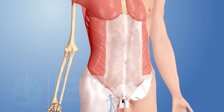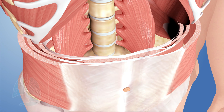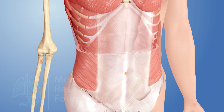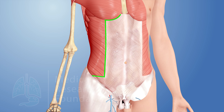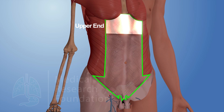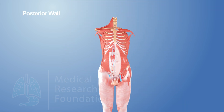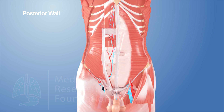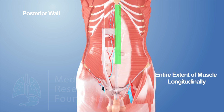The rectus sheath presents anterior and posterior walls. The anterior wall is complete and covers the entire extent of the muscle longitudinally, from the upper end to the lower end. The posterior wall is deficient above and below, and hence does not cover the entire extent of the muscle longitudinally.